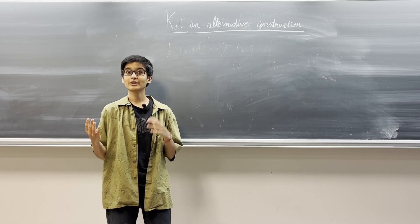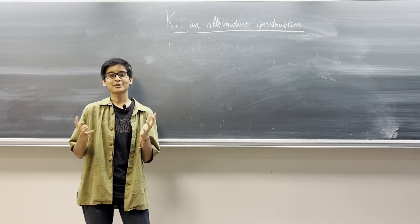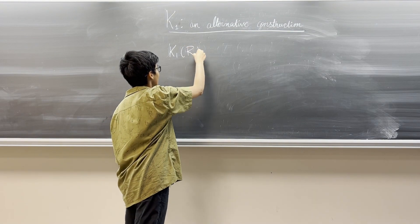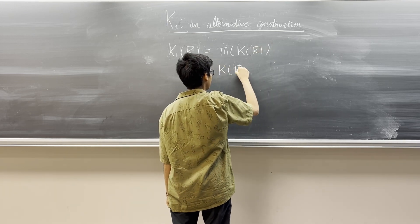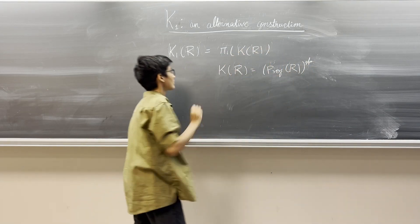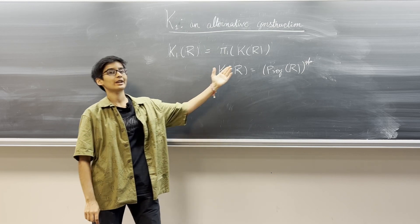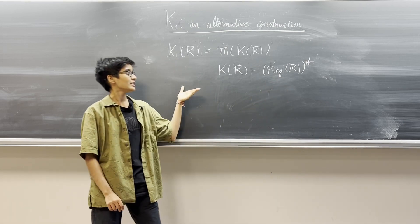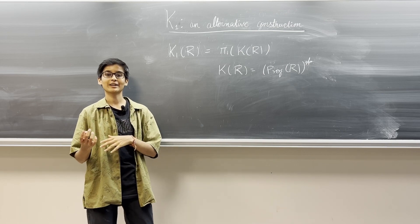This is not to say that one notion of K1 is better or worse than the other. We are happy to have both the formal definition and an alternative construction of K1 as they serve different purposes. To start with, let me recall the formal definition of the first K group. The first K group of a commutative ring R is defined as the first homotopy group of the K-Theory space known as K of R. Here K of R is the group completion of all the projective modules over the ring R. We can see that this is a very abstract definition and might not be the most practical way to actually perform computations. So to contrast this, let us now look at the alternative description of K1.